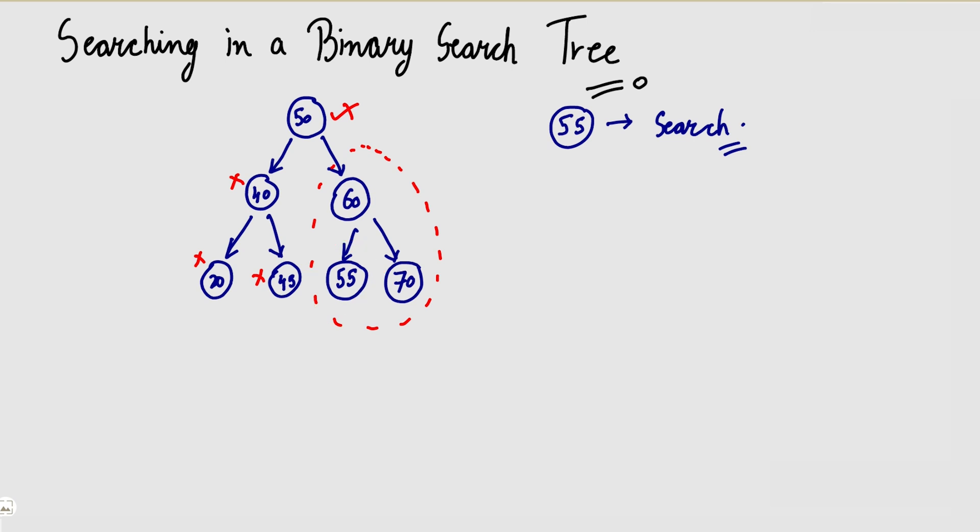That is our result. So I will say 55 is in the binary search tree. If we reach a leaf node and still haven't found it, then we will say that 55 is not in the binary search tree. So if I tell you to search something in a binary search tree, you search by comparing bigger or smaller at each node.